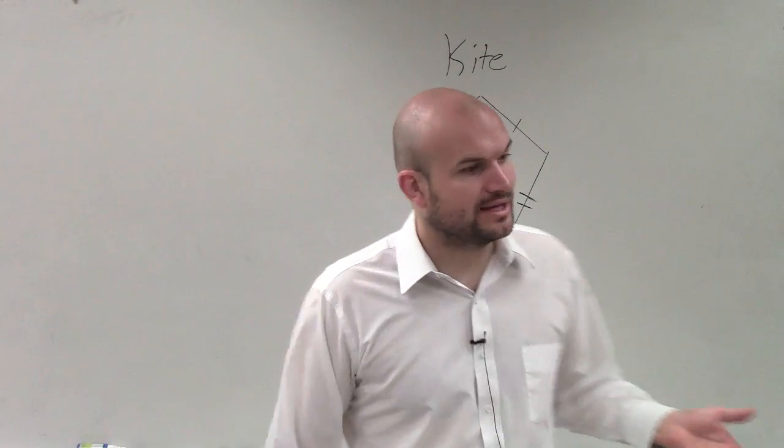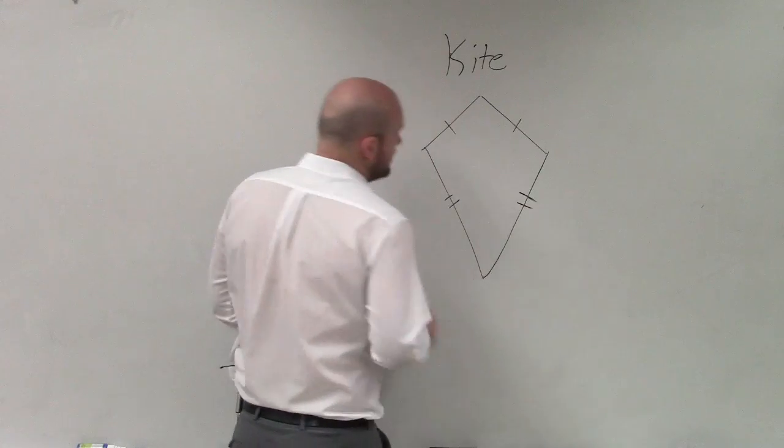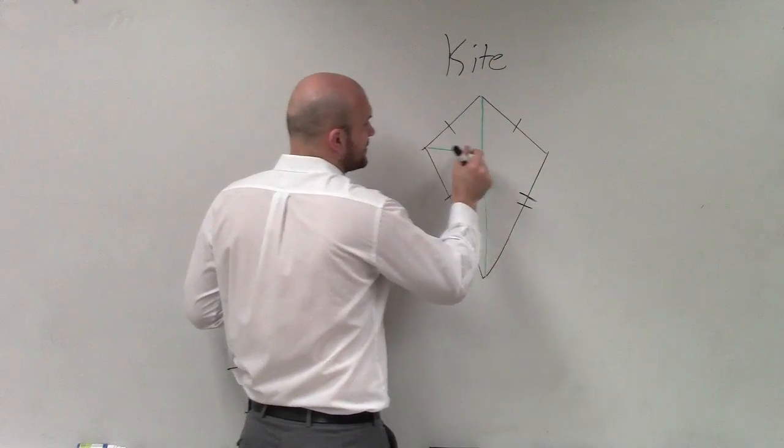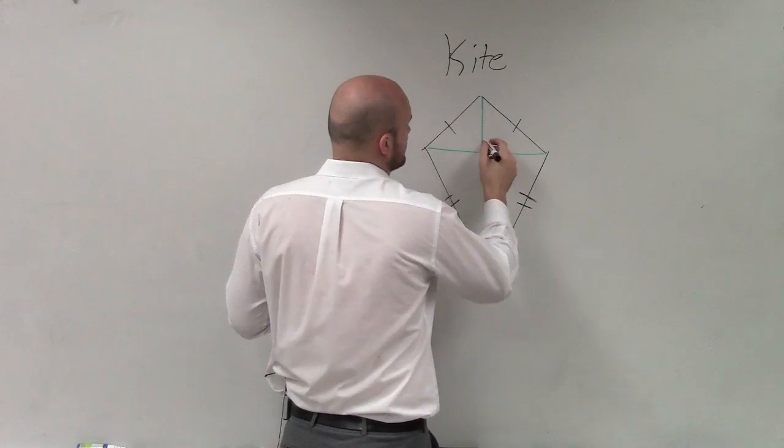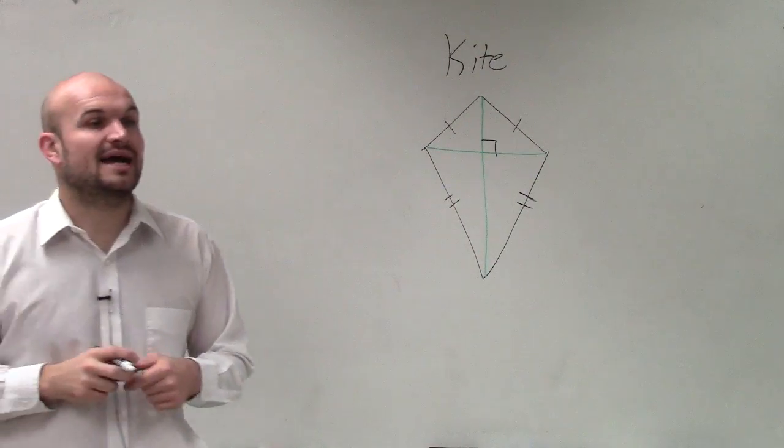For it to be a kite, all we need to have, in basic reality, what we need to do is have the diagonals be perpendicular. So the diagonals are perpendicular.